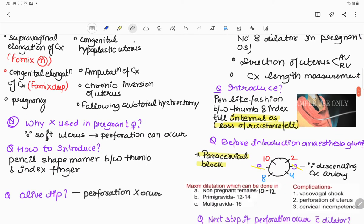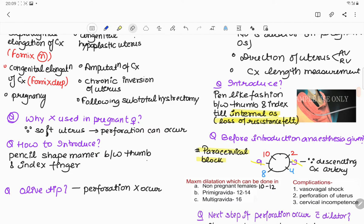Different questions are asked: why is it not used in pregnant uterus? Because pregnant uterus is soft in nature so perforation can occur. We have discussed how to introduce this and why tip is olive in nature. Olive tip is there so that perforation does not occur.